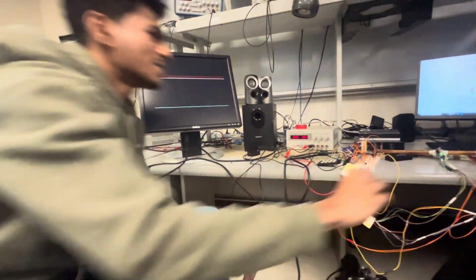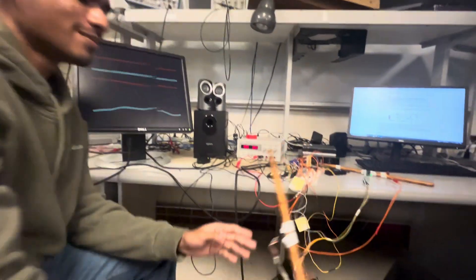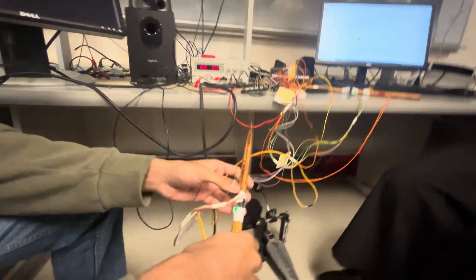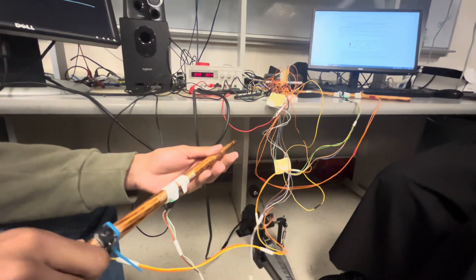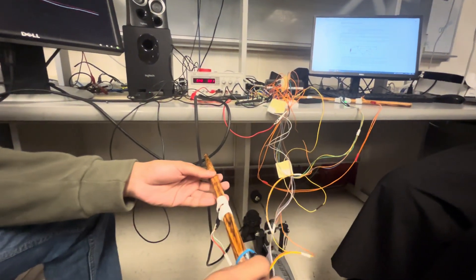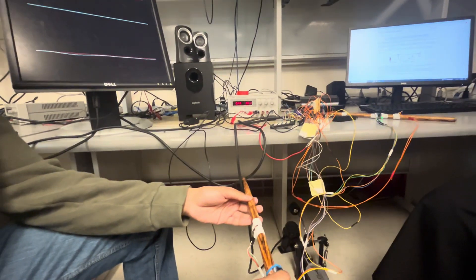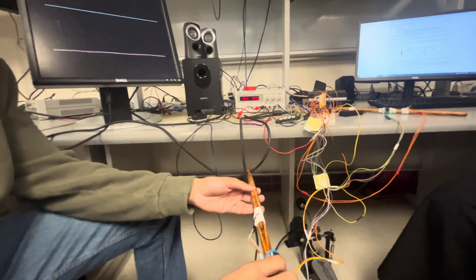So for stick monitoring, we already, we used that MPU 6050, the IMU. Uh-huh. The stick is supposed to be held like this, downward. Okay. And it uses the gyroscope value only, to trigger sounds.